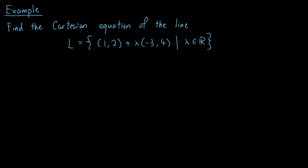Now, let's look at an example of converting a vector equation into a Cartesian equation. Suppose we have a line, described as (1,2) + λ(-3,4), where λ is a real number.